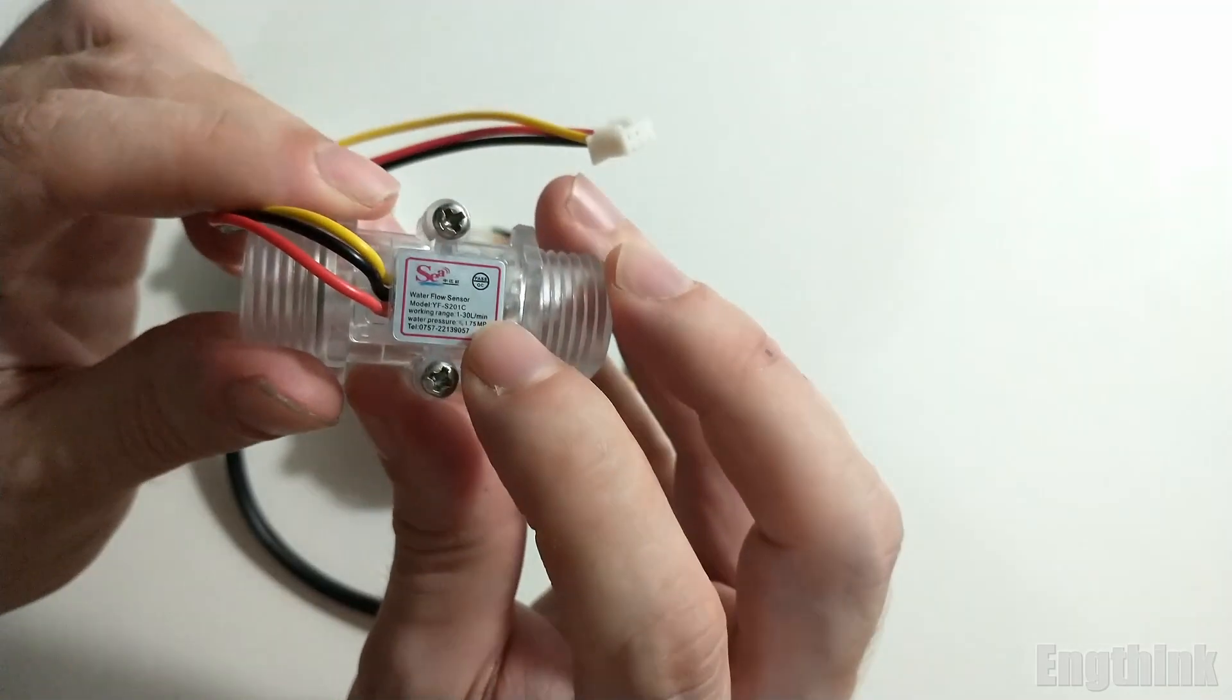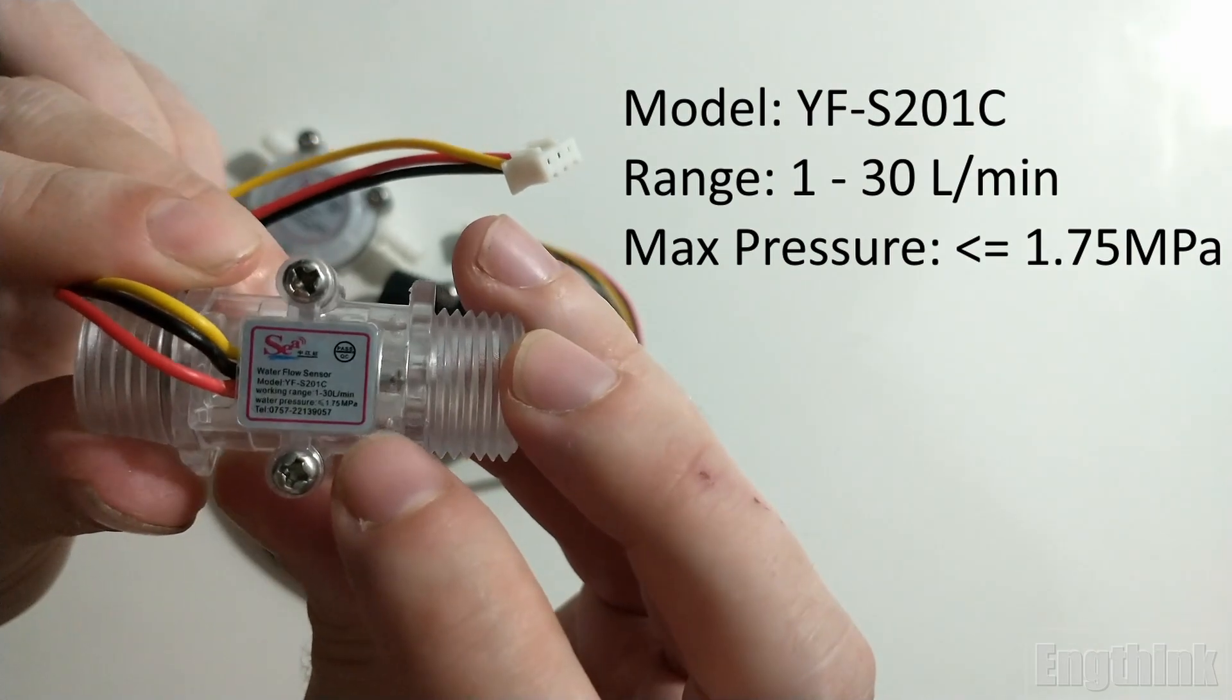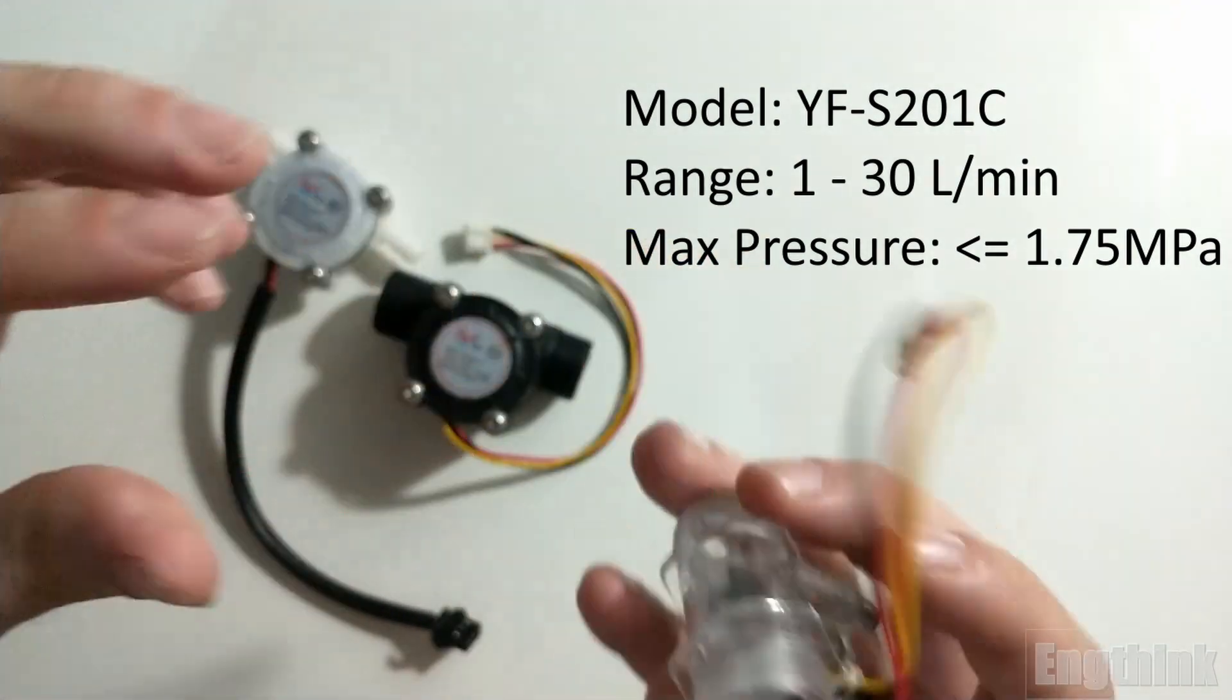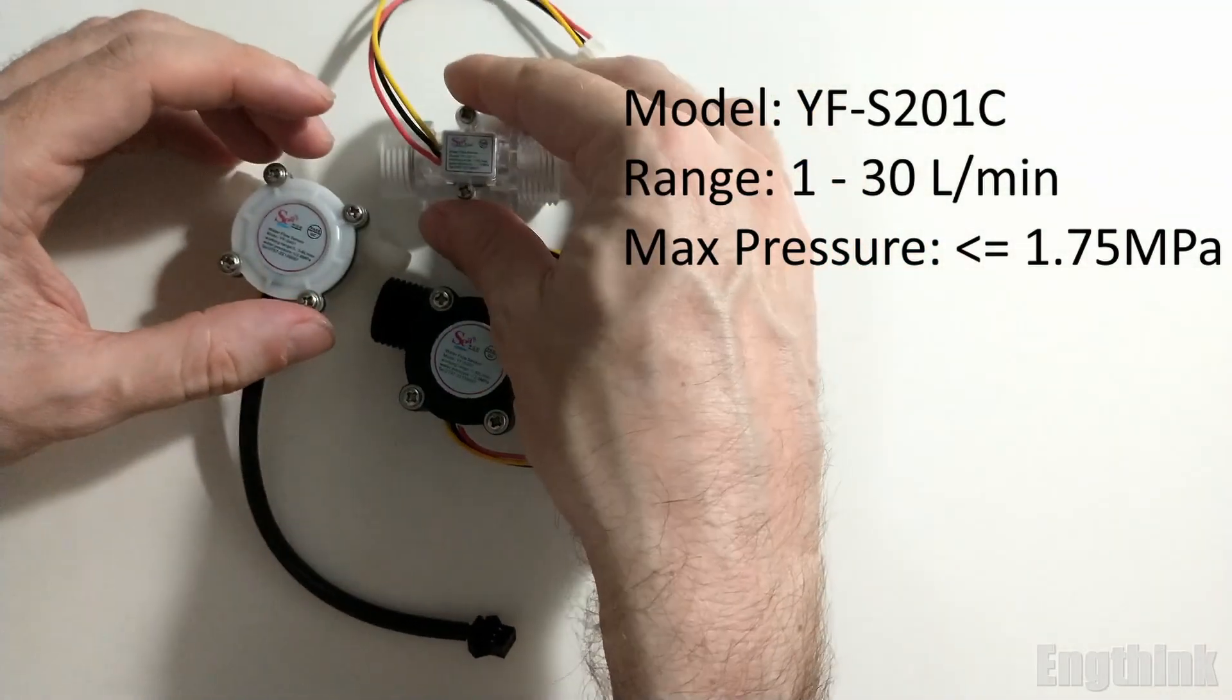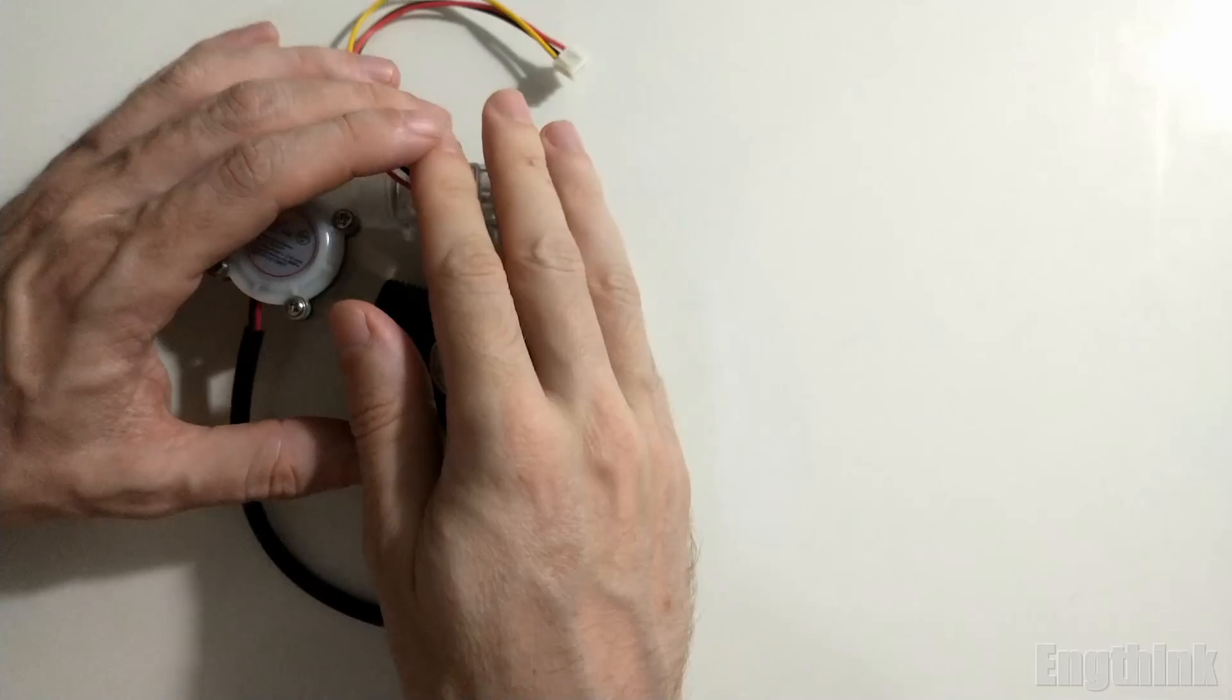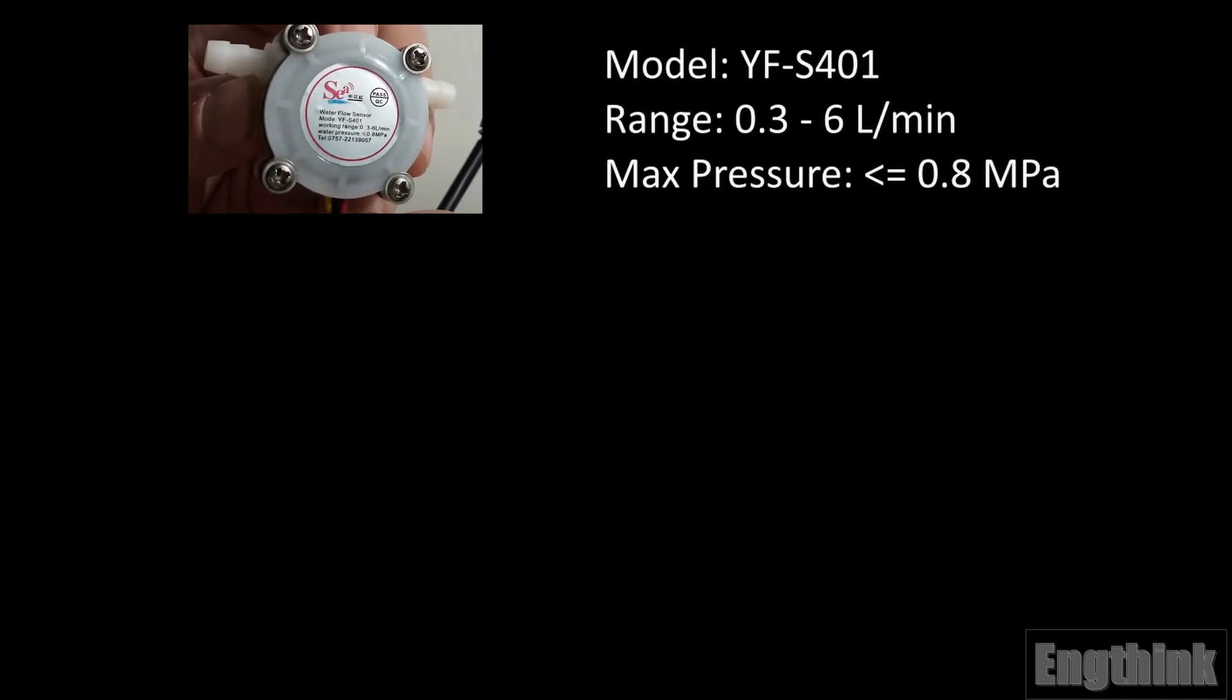We have black, red, and yellow wires. Let's review the flow rate for the transparent model that I didn't mention before. The flow rate is between 1 to 30 liters per minute, and the pressure should be less than 1.75 MPa.